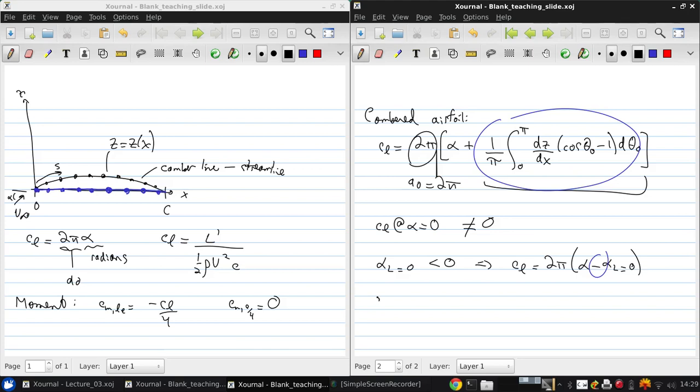Again, if we look at the moment, CM about the leading edge is negative π over 2, A0 plus A1 minus A2 over 2. And CM about the quarter-chord is π over 4 times A2 minus A1. So, the quarter-chord point is not the center of pressure for a cambered airfoil because the moment is not 0 there.